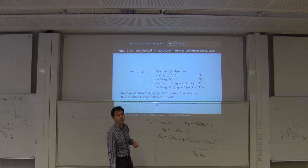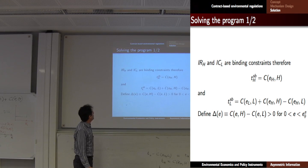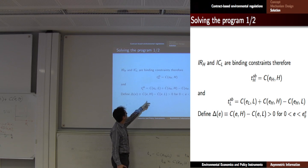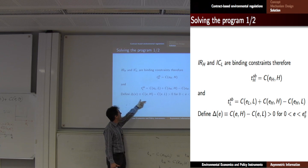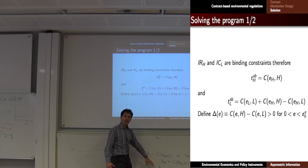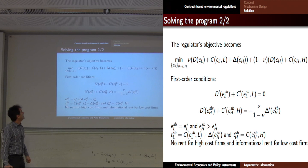You can see that for the same level of emission, the cost is higher for the high-cost firm than for the low-cost firm. Therefore this rent is positive for any level of emission — you have to pay more than you would like to due to asymmetric information. You label delta E as the informational rent, which is the difference in cost between high-cost and low-cost for any level of emission. Then you substitute the transfer into the objective function to get a simplified problem.